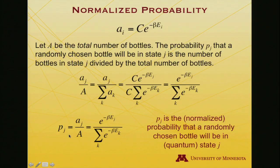So just writing that all more compactly, the probability that I will find a bottle in state j when I randomly select it is equal to the exponential of minus beta times its characteristic energy divided by this sum of the exponential of negative beta all of the energies. That is, the probability normalized that a randomly chosen bottle will be in quantum state j.